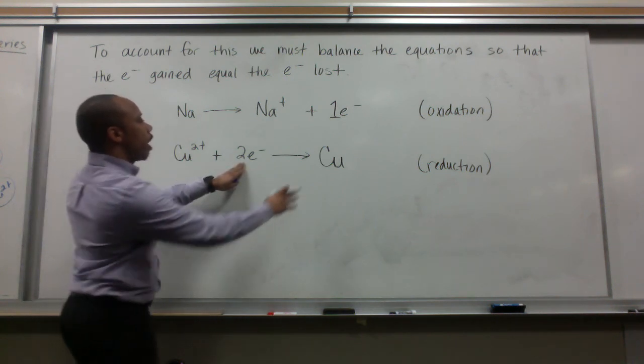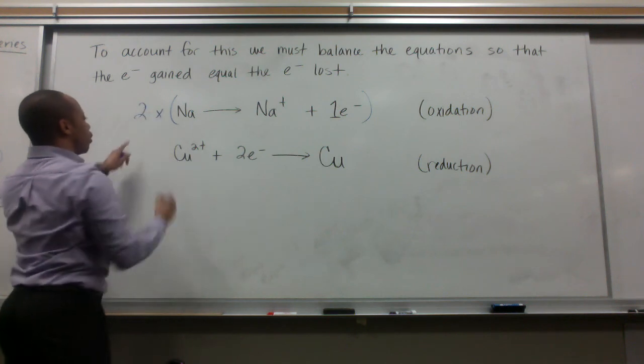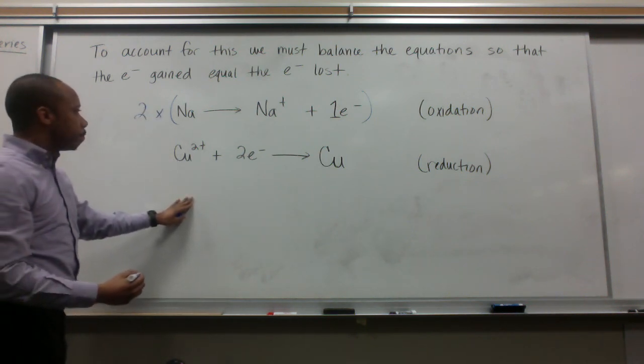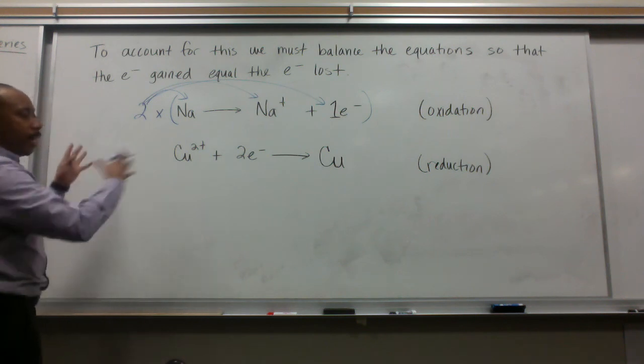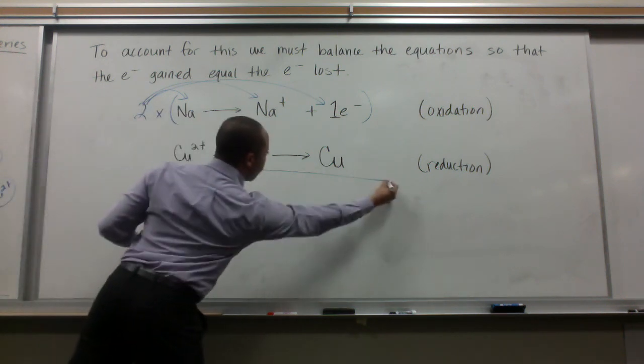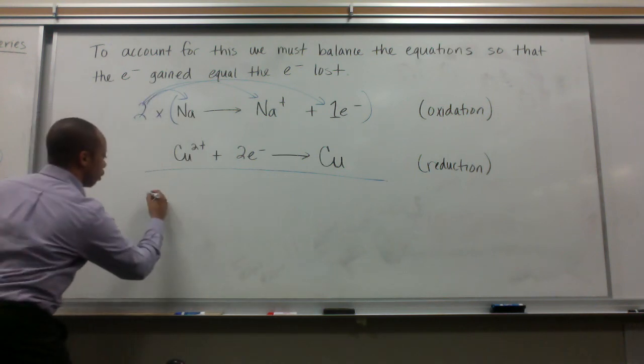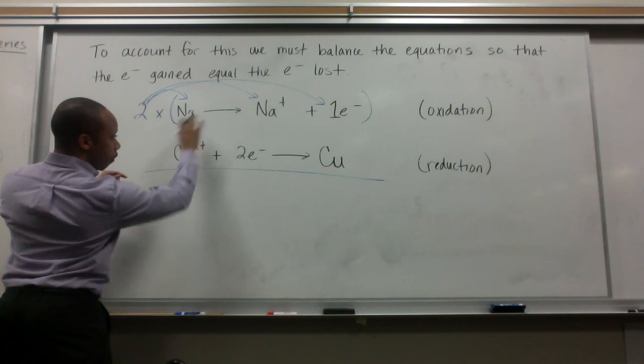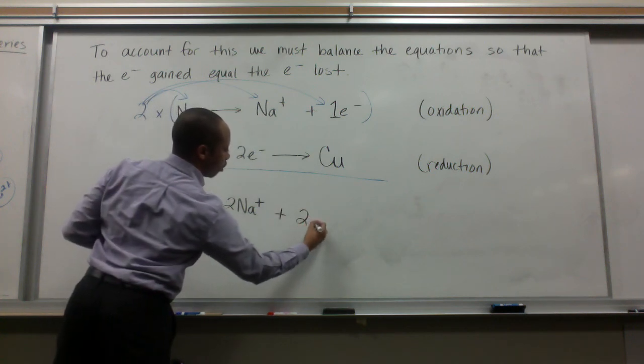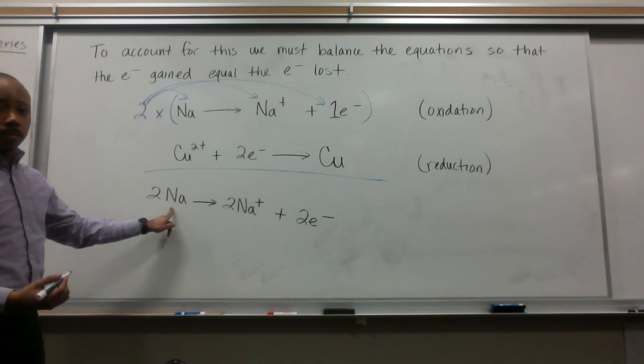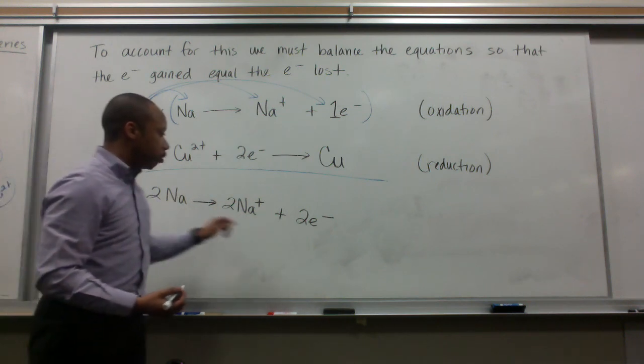We have two electrons here. We only have one electron here. If we multiply this entire equation by two, this two gets distributed into everything. After we do that, we have 2 Na going to 2 Na plus, plus 2 electrons. It took two sodium atoms, and it produced two Na plus ions, and these atoms lost two electrons.